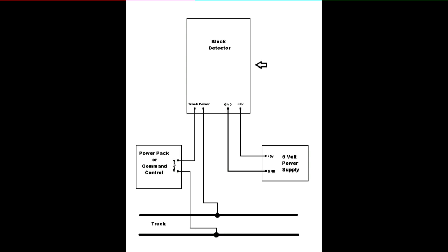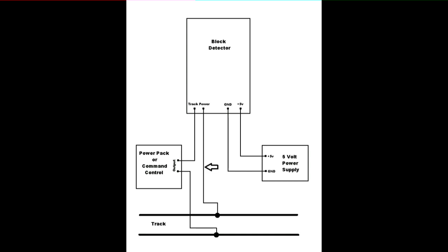On this block diagram, you can see one block detector board with a section of track representing the block related to this block detector. On the right is a 5-volt power supply whose plus and minus outputs are wired to the power inputs of the block detector. The block on the left represents a standard power pack or a DCC command control booster. One output goes to the common side of the track, the other output goes to either of the track power inputs of the block detector, and the other track power input of the block detector goes to the other side of the section of track.